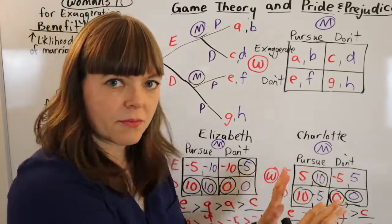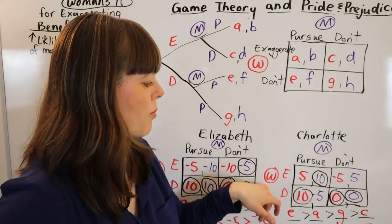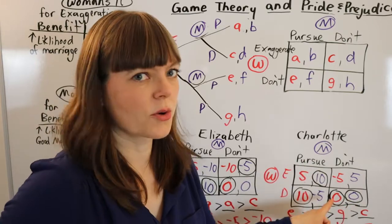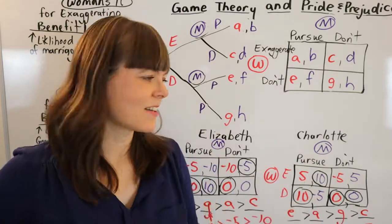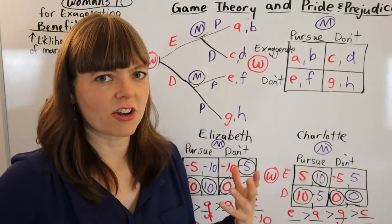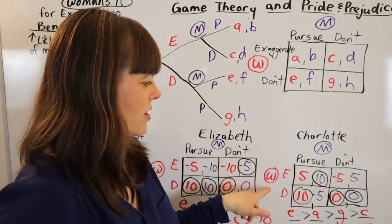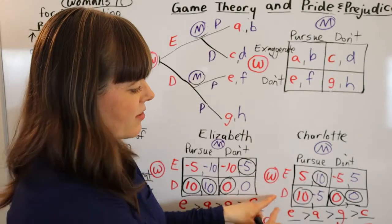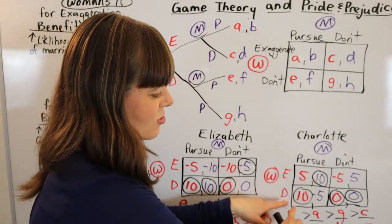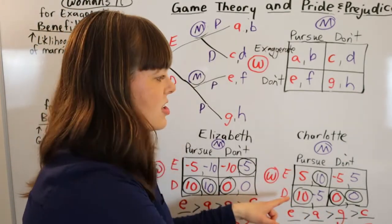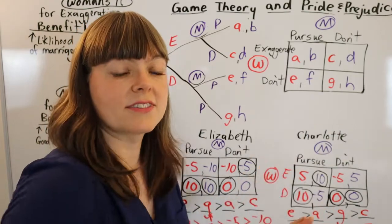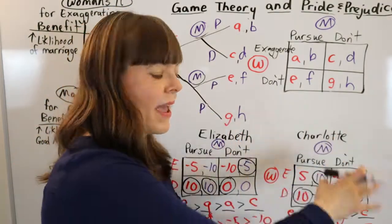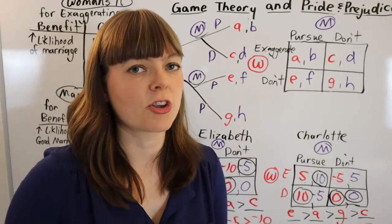What about over here? We have a Nash equilibrium where the woman does not exaggerate and the man does not pursue. So that actually doesn't fit very well with Charlotte's arguments. As a matter of fact, she's arguing that the woman should exaggerate. So it's actually kind of weird that we notice that not exaggerating is a dominant strategy for the woman as I've set up these payoffs. We have a problem. That means these payoffs probably don't match her arguments very well.